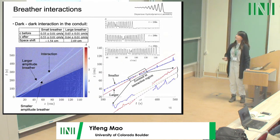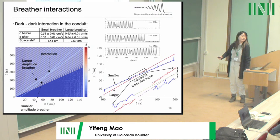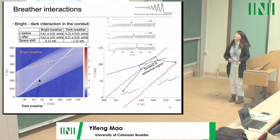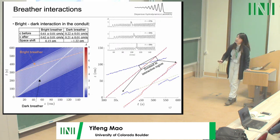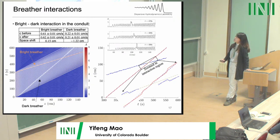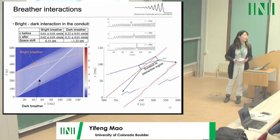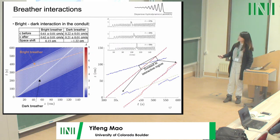For dark-dark interaction, we see a nice wave structure where the dark breather interacts with another dark one, showing the interaction dynamics. For bright-dark interaction, since the bright breather travels faster than the carrier wave and thus faster than the dark breather, we have a localized periodic traveling wave where the bright breather overtakes the dark one, producing an interaction region and continuing after. Tracking trajectories, the bright breather experiences a very small spatial shift — barely impacted — while the dark breather has a negative phase shift.